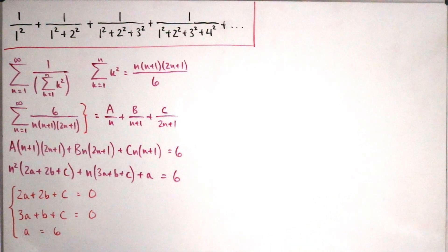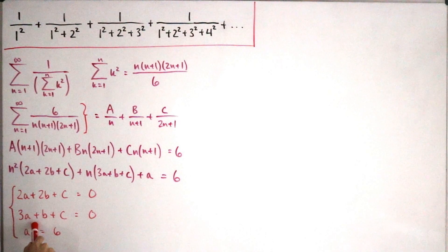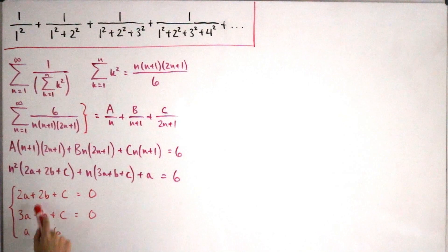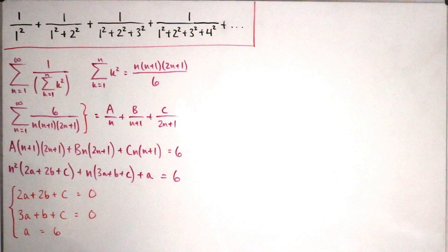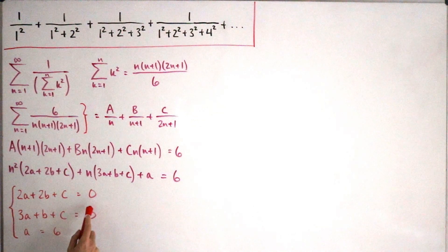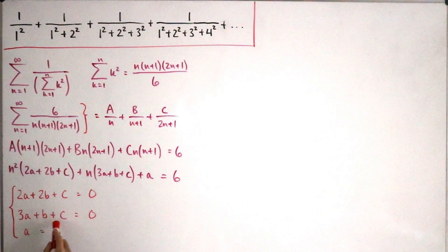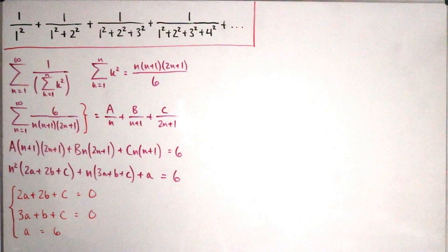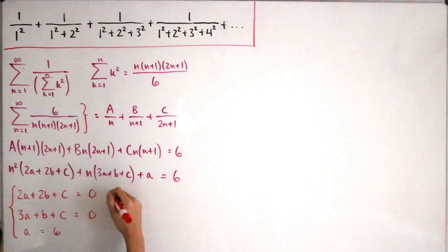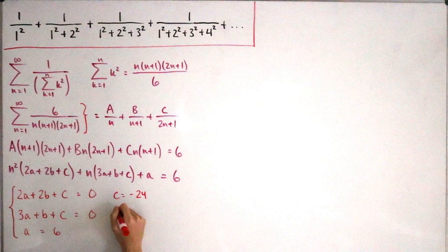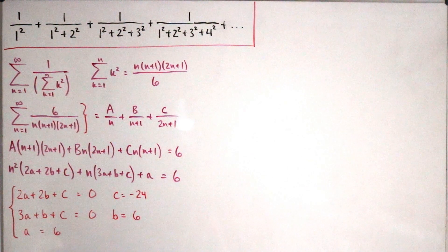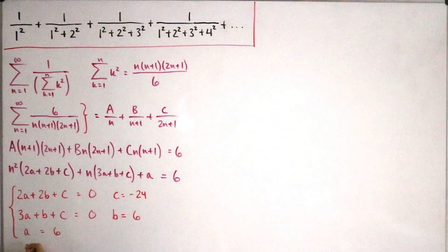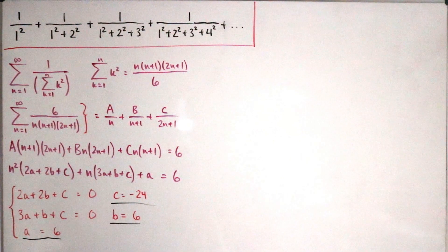Since A = 6, we use the two remaining equations to solve for C and B. Subtracting appropriately, the 2B and −2B cancel, giving −4A − C = 0, so C = −24. Then plugging everything back in gives B = 6. So our coefficients are A = 6, B = 6, C = −24.